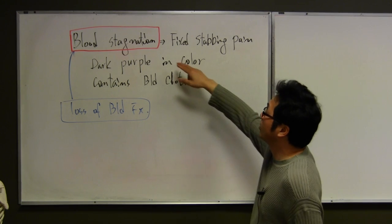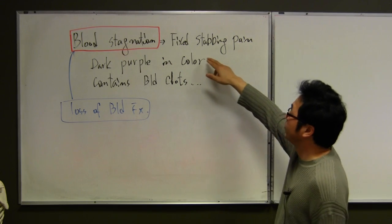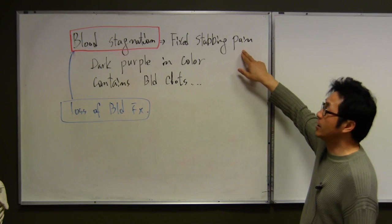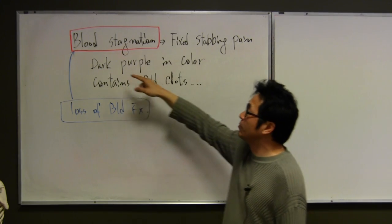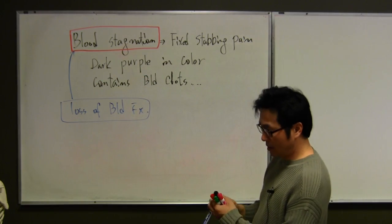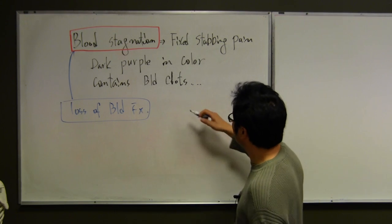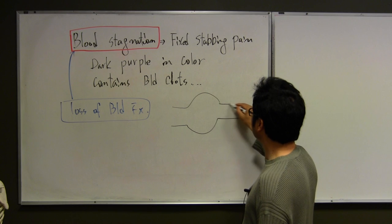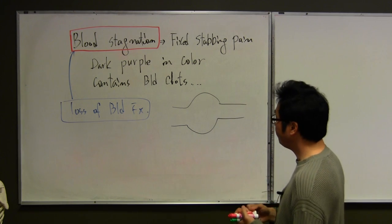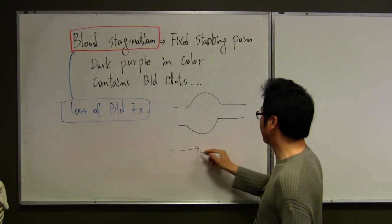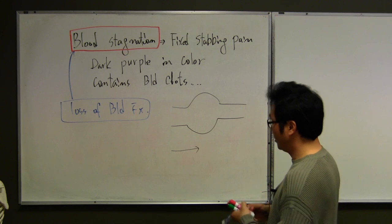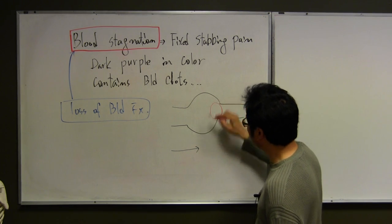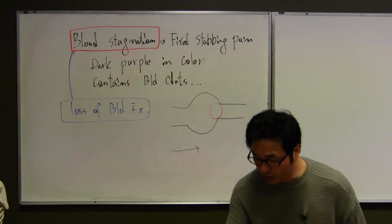The blood stagnant related to pain will be fixed, stabbing pain. It refuses to touch because of excess type. And also, mostly blood stagnates. I'll show you some pictures. If blood flow from the left side to the right side, there is some that stagnates the blood. I have to use it in purple color.